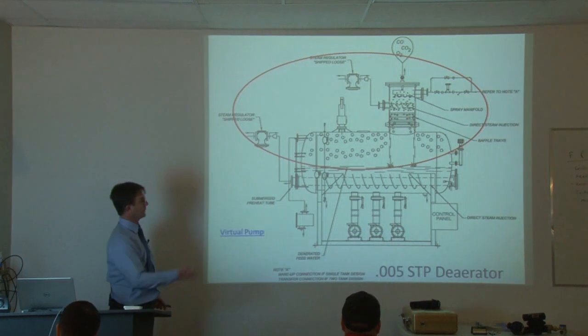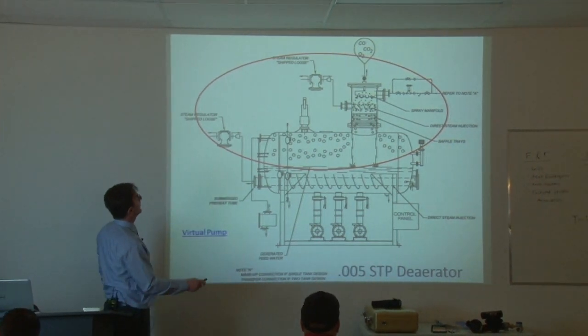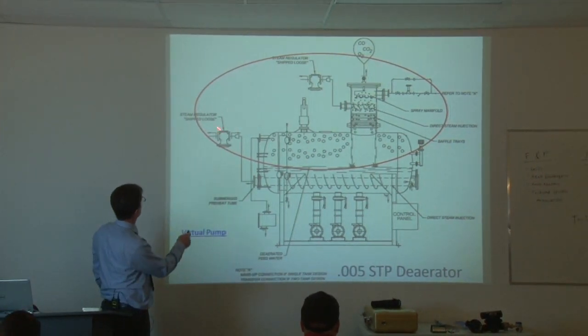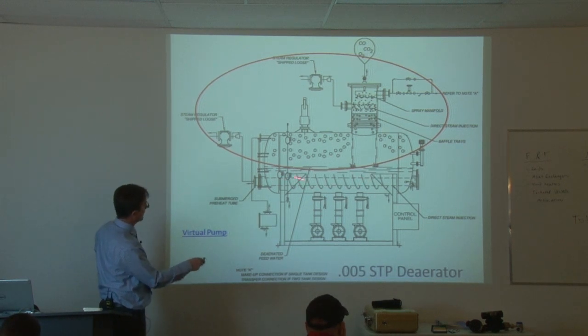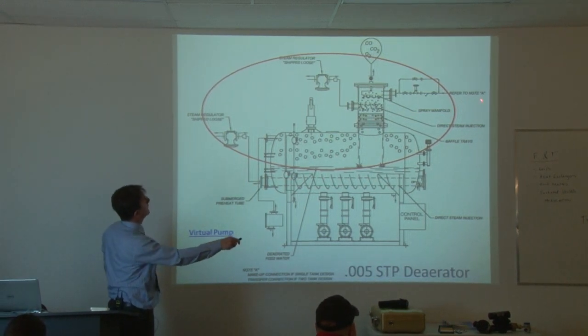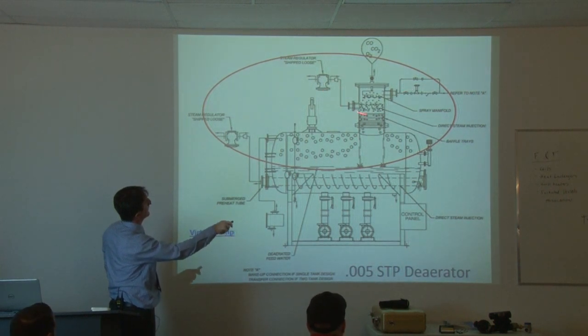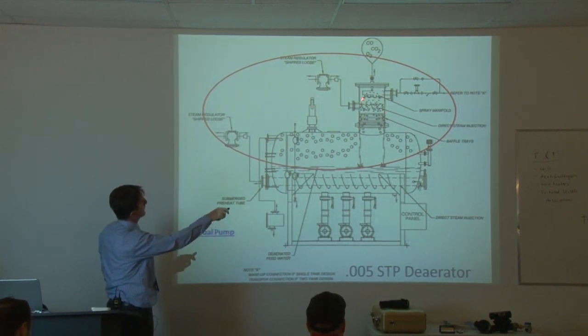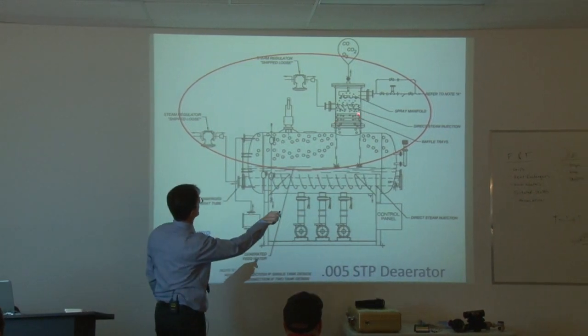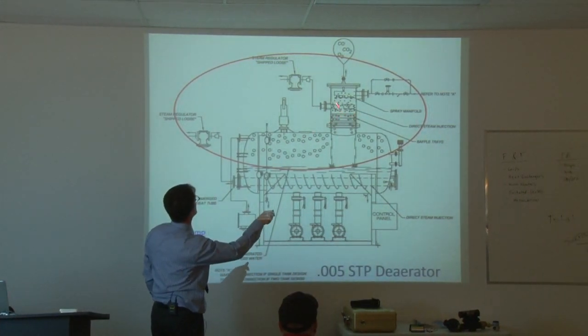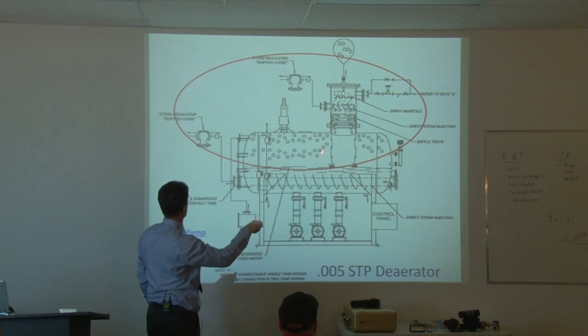So if you look inside, this is one example of a deaerator. So pressurized deaerators. You have steam pressure going to a sparge type here, a sparge tube in here, and then you've got steam coming to that tube, and your feed water comes in through the top, and your condensate comes in through—it doesn't show, but the condensate comes back to the deaerator as well.